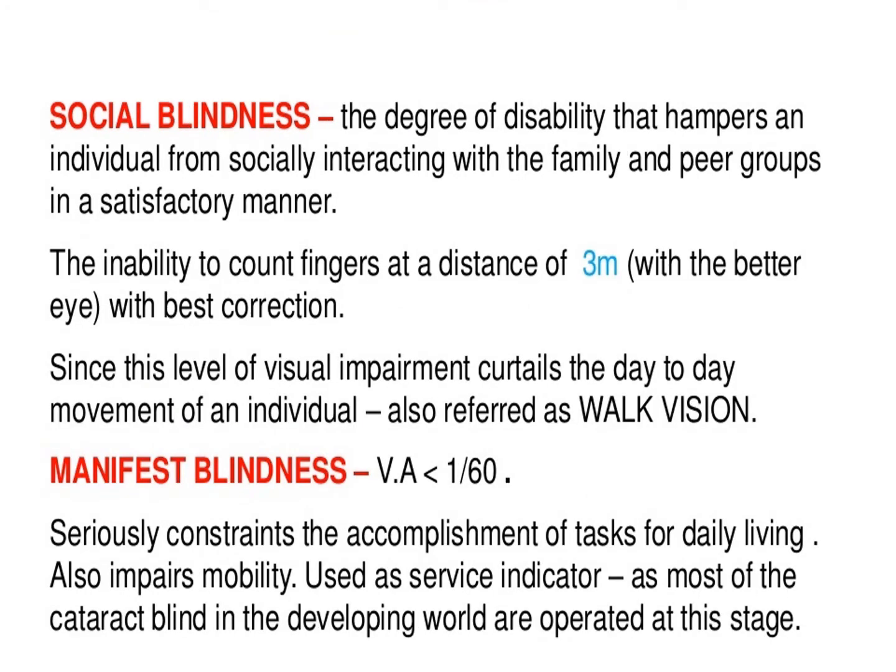Social Blindness: the degree of disability that hampers an individual from socially interacting with family and peer groups in a satisfactory manner. The inability to count fingers at a distance of 3 metres with the better eye with best correction. Since this level of visual impairment curtails day-to-day movement of an individual, it is also referred to as work vision.